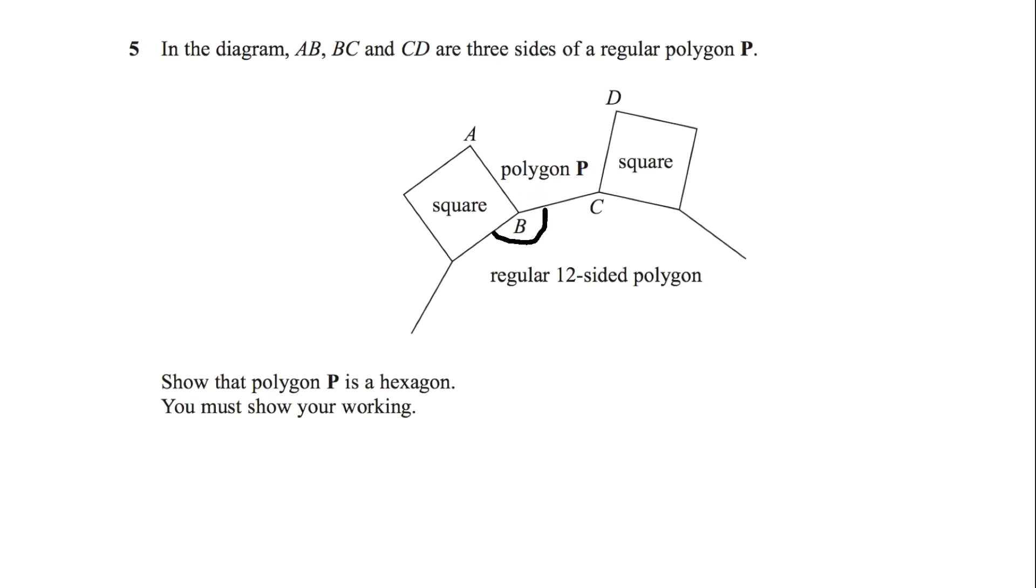To work out the angle of B we're going to be using the interior angle of a polygon equation. It states that N minus 2 in brackets multiply by 180 will give us the sum interior angle of a regular polygon. We know that this regular polygon has 12 sides. N stands for the number of sides. So 12 minus 2 in brackets multiplied by 180.